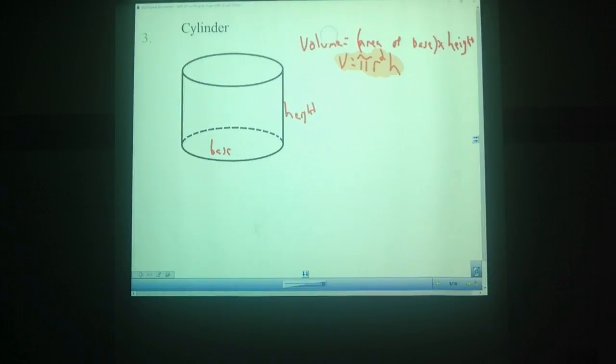Area of base times height. Let's put some actual numbers to these. Pi r squared times height. Let's say our radius is 5 centimeters and our height is 6 centimeters. See if you can find the volume of that cylinder. Pause the video, and we are back. The trickiest part is setting up the formula correctly.